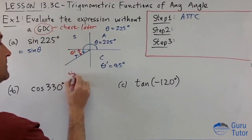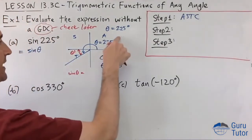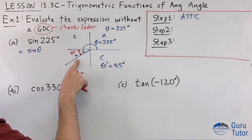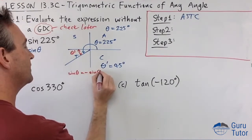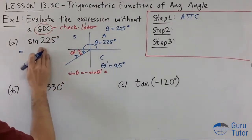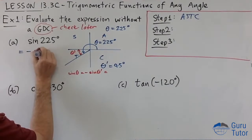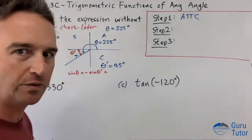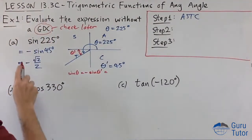So our answer: we're in the third quadrant. In the third quadrant, was sine positive or negative? This is where we use ASTC — remember, only tan was positive in the third quadrant, so sine is negative. sin(θ) equals negative sin(θ-dash), which equals negative sin(45°), which is negative root 2 over 2.